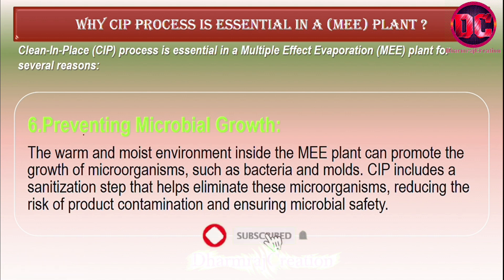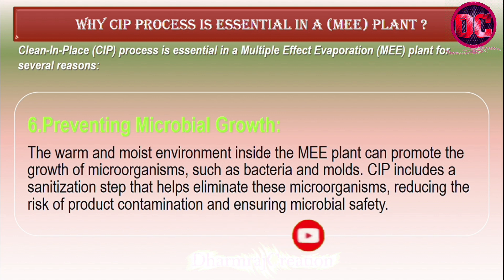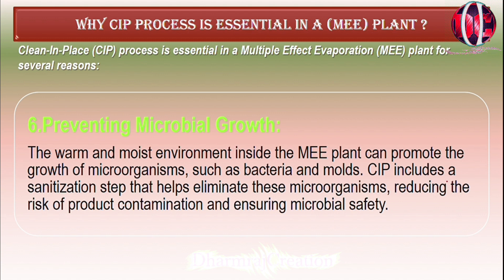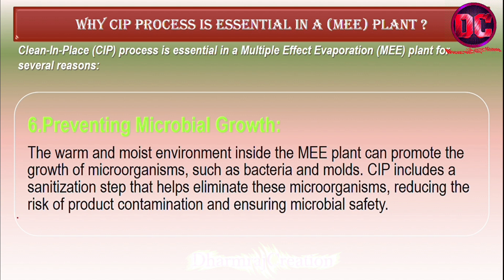Sixth, preventing microbial growth: the warm and moist environment inside the ME plant can promote the growth of microorganisms such as bacteria and molds. CIP includes a sanitization step that helps eliminate these microorganisms, reducing the risk of product contamination and ensuring microbial safety.